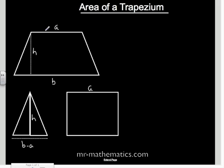Now the length of our rectangle would be the shorter parallel side A and again the height would be H and we are going to add these two areas together. So you have got the triangle plus the rectangle which will make our trapezium.